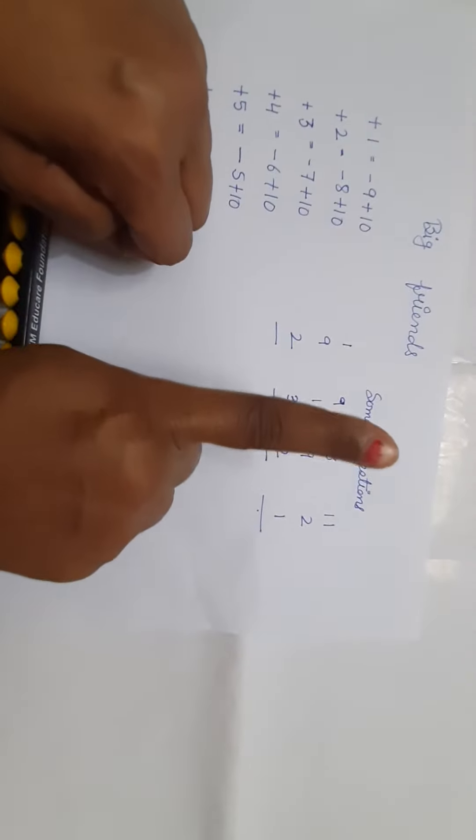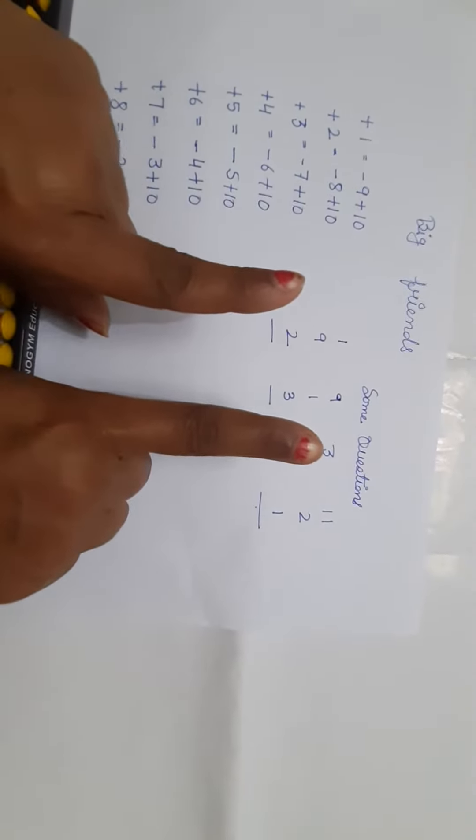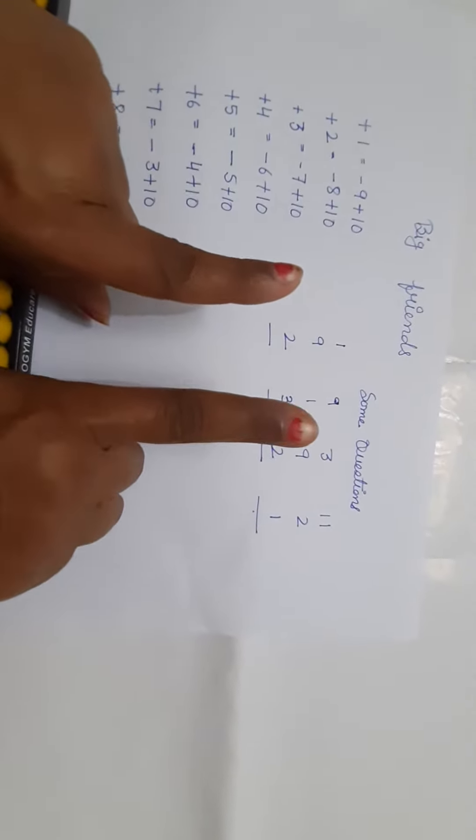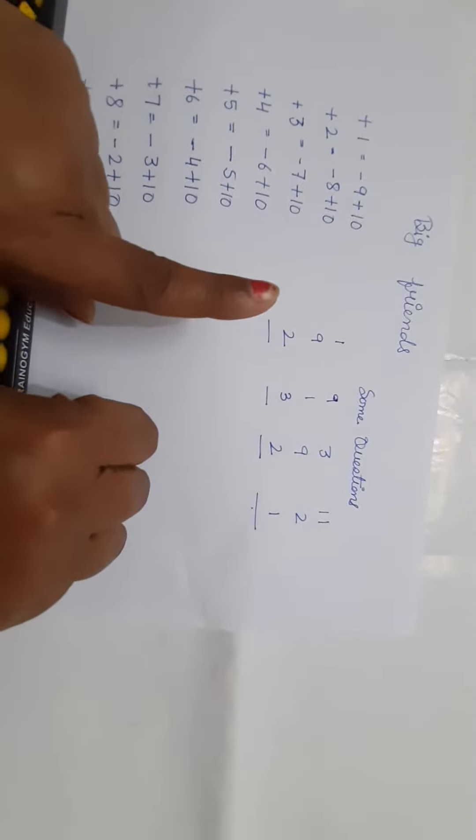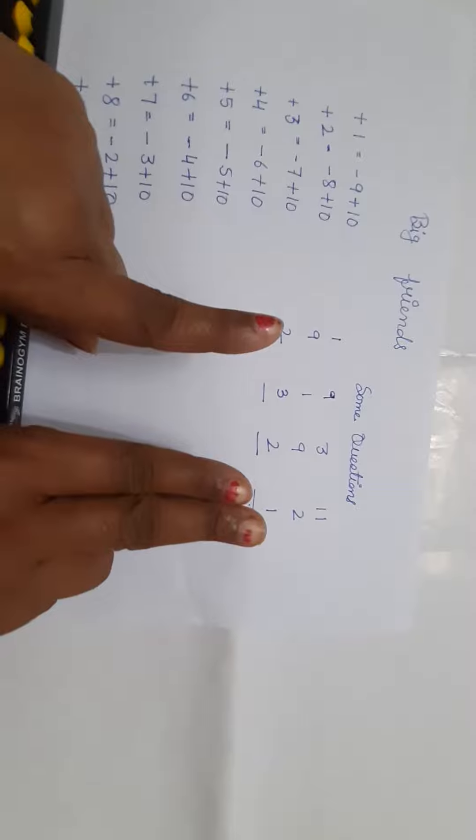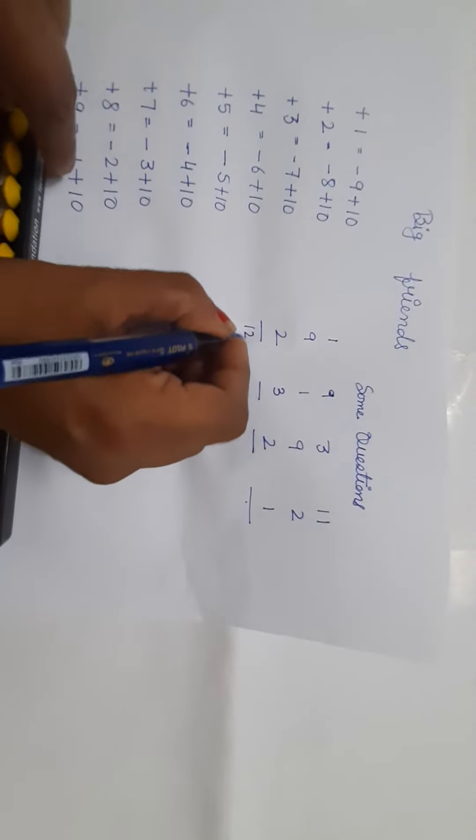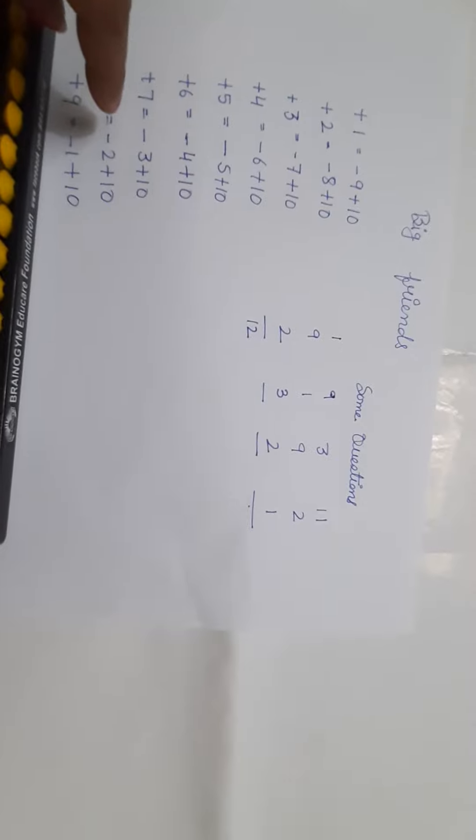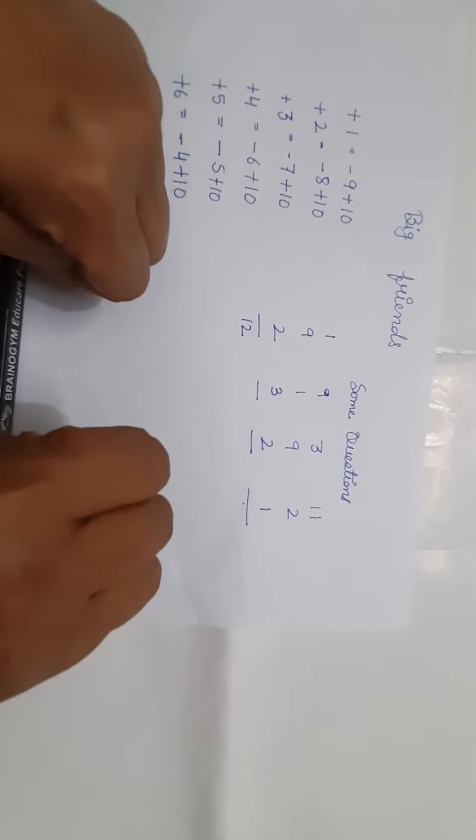1 plus 9. Plus 9 is not available. So the rule is minus 1 plus 10. Plus 2, our answer is 12. 10 is a complement in the big friends, so 10 is used with every digit.